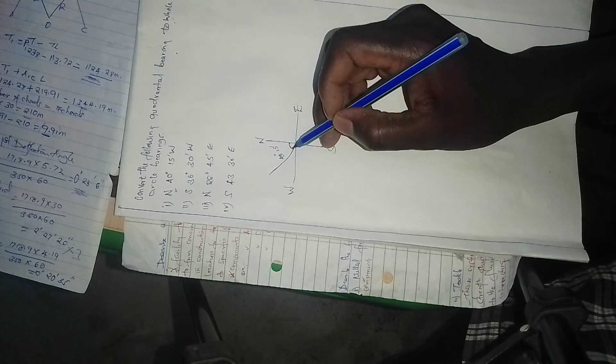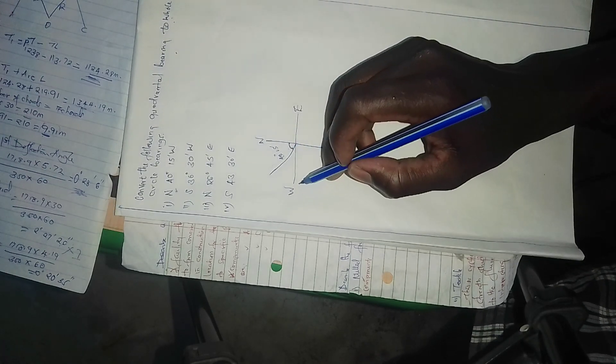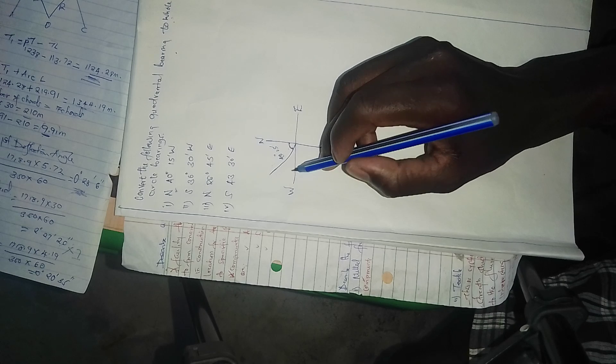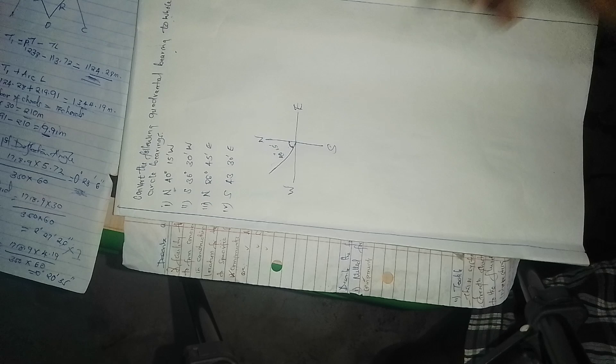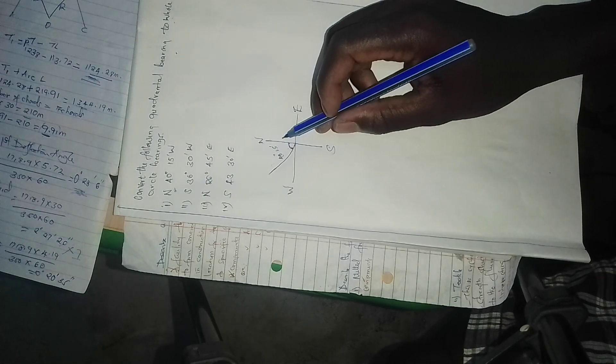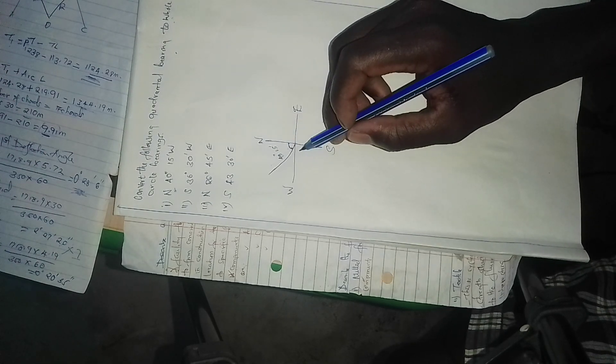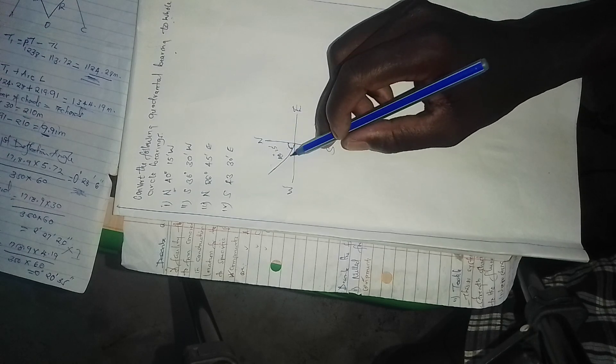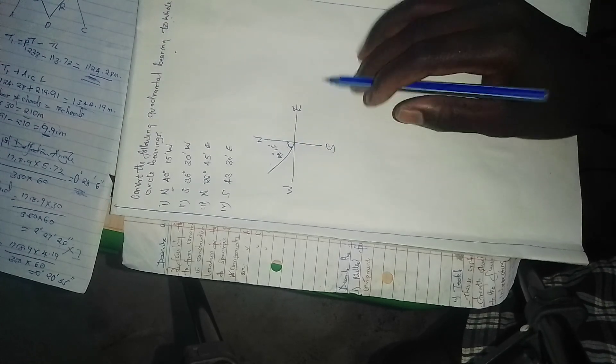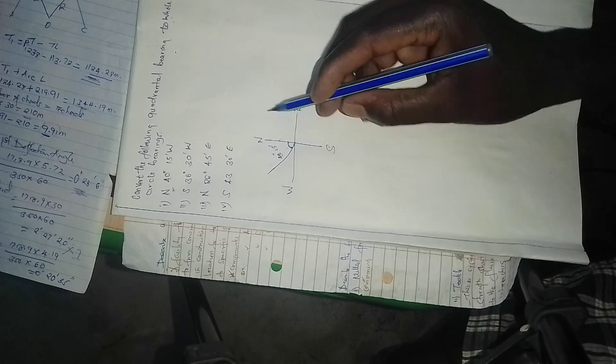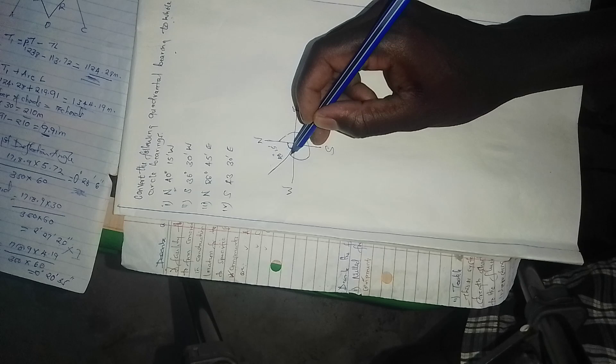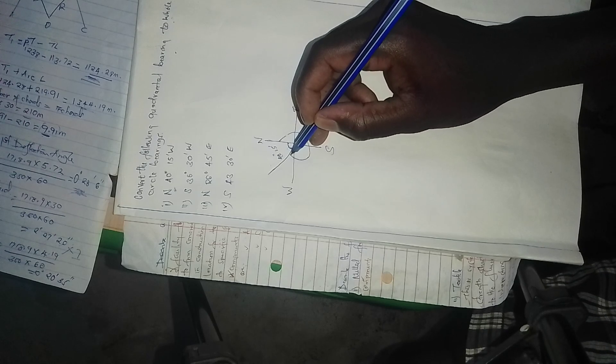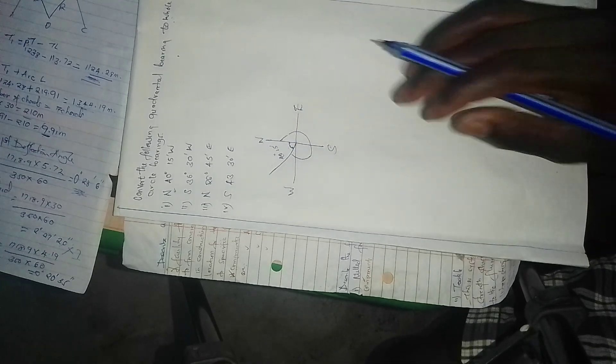So how can you get whole circle bearing? Whole circle bearing we start from north going clockwise. We start from north up to here, so that is whole circle bearing.